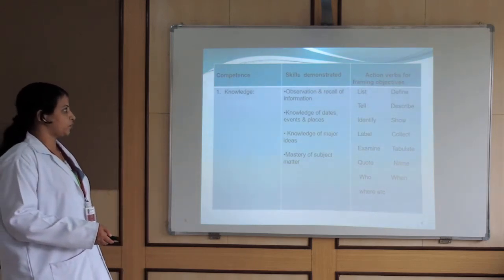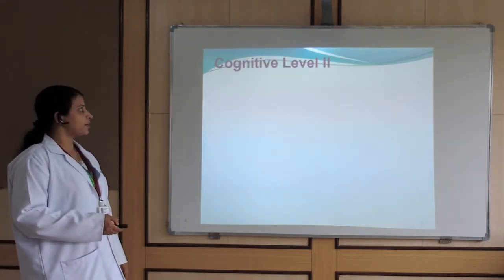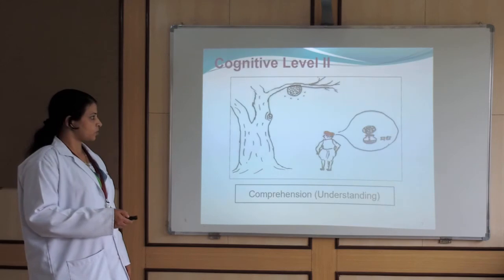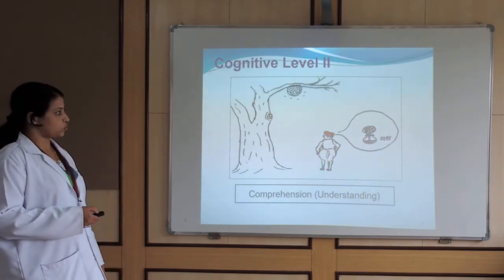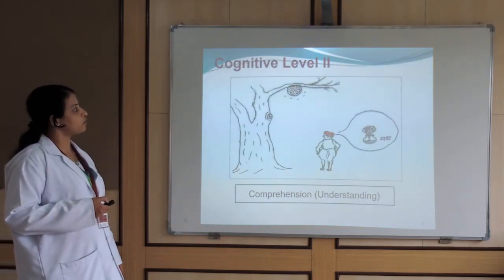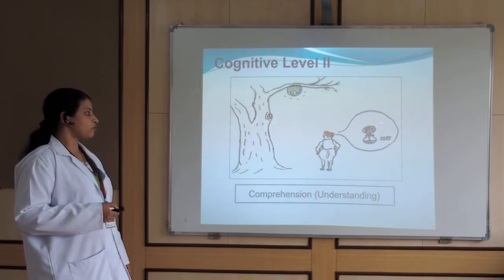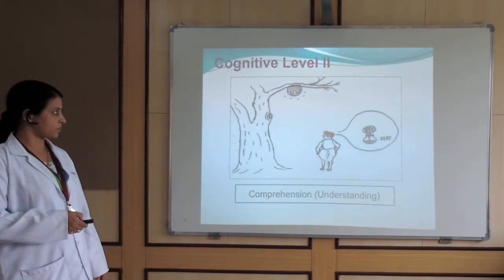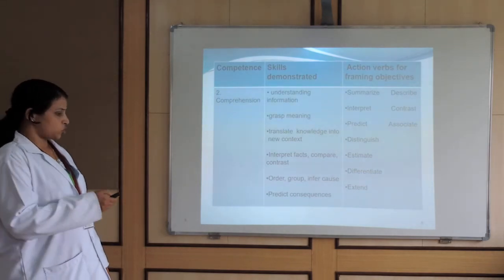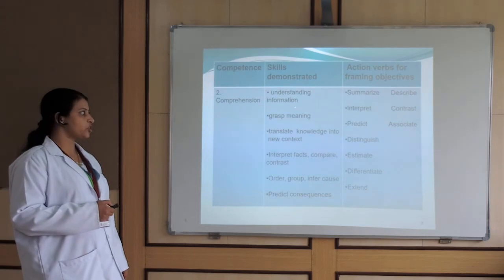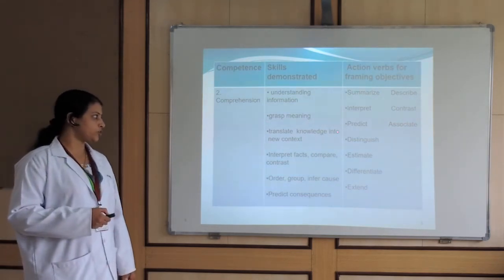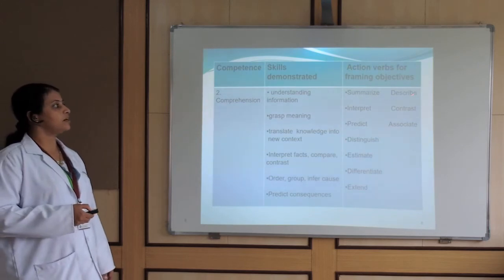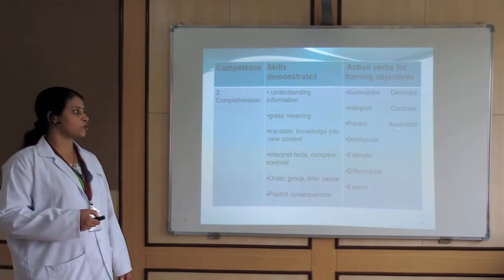Level 2 is comprehension — slightly higher than knowledge, dealing with understanding. This person is applying his knowledge of honey for comprehension, which is cognitive level 2. Skills assessed in this domain include understanding information, grasping meaning, and translating knowledge into new contexts. Action verbs to frame questions include: summarize, describe, interpret, contrast, predict, associate.